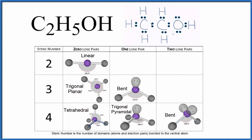If we use the AXE notation, for example this carbon here, we'd have A, that's the carbon, X, the things that are bonded to it, we said one, two, three, four, and no lone pairs. So we'd have AX4 for this carbon here, that would be tetrahedral.